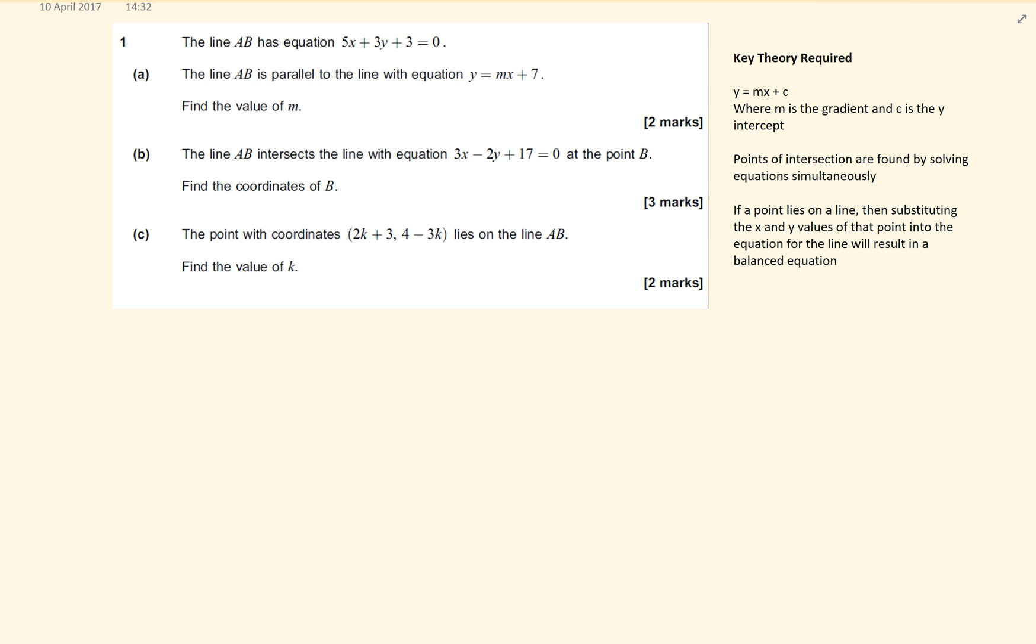Now for part c of this equation, I've just removed all the workings so I've got more space. The theory, as I've written it over there, says that if a point lies on the line, then substituting the x and y values of that point into the equation of the line will result in a balanced equation.